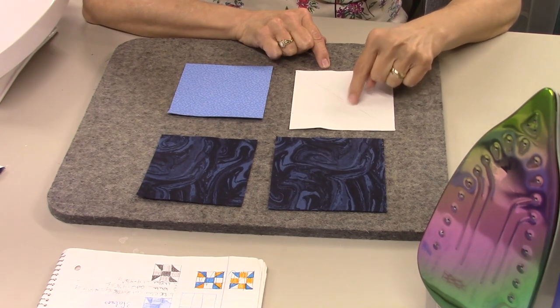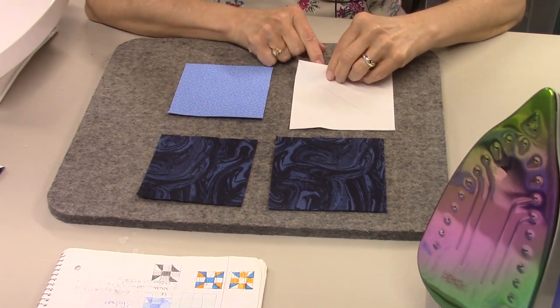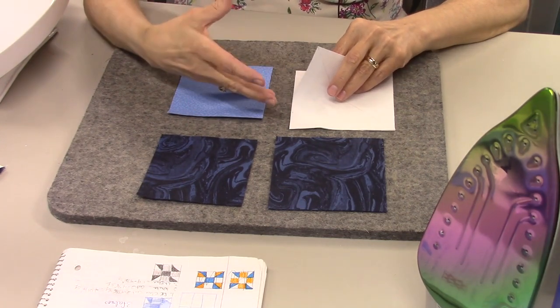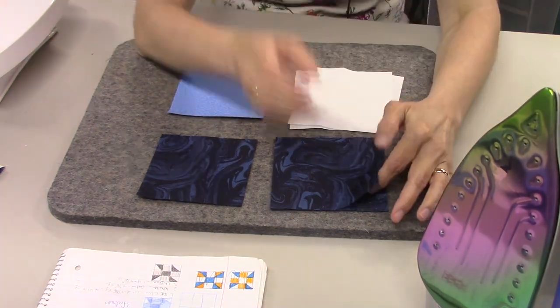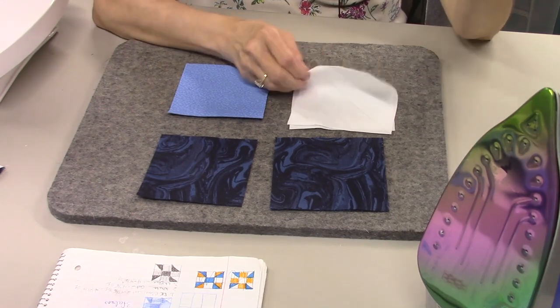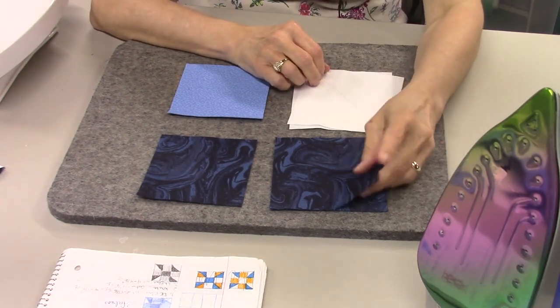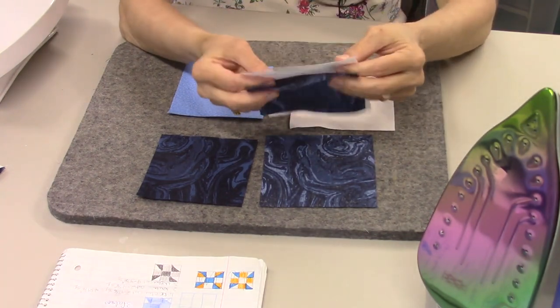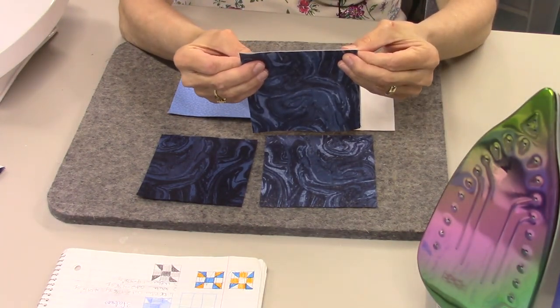On those pieces you can draw a diagonal line from corner to corner, and that's going to be a guide for stitching. We're going to stitch a quarter inch away on both sides of these. These are the only piecing and cutting we have to do for this block. You're going to match these up with the dark 4 and 7/8 inch squares, right sides together, so your drawn line is going to show.